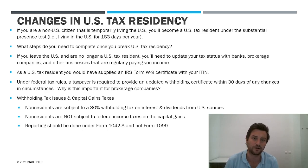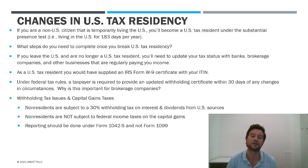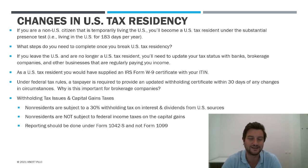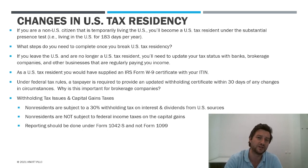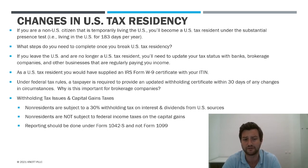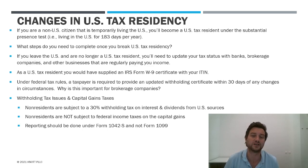A lot of U.S. source interest is exempt under the portfolio interest exemption, but the big withholding hit is going to be on U.S. source dividend income. So if you have a brokerage account and you're invested in U.S. securities — Apple, Google, Tesla, whatever the stock might be — and you receive dividend income, the broker now has to withhold 30% in tax on the dividends and pay that to the IRS. This is in contrast to when you're a U.S. person, where there was no withholding because the companies know that you're going to be reporting the income on your tax return and paying tax on it every year. That's the big second change: the withholding tax that applies to non-residents kicks in as soon as you lose that U.S. tax residency.